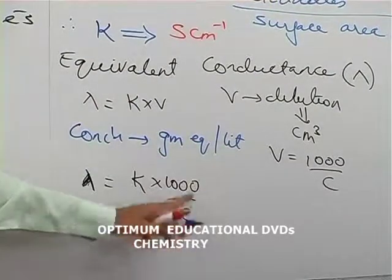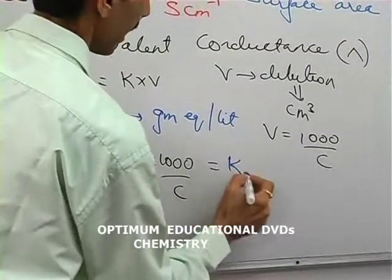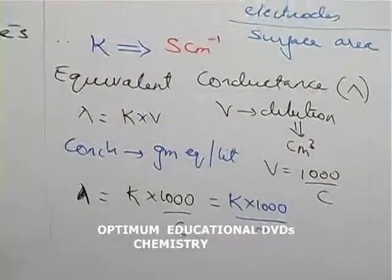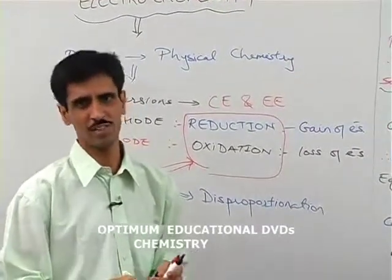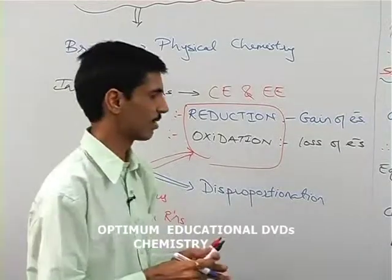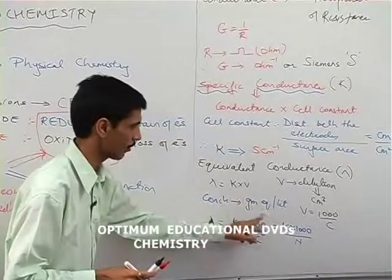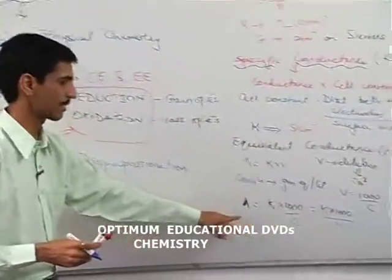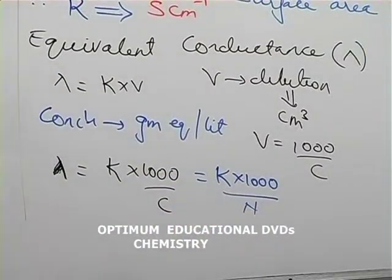Since concentration C is expressed in gram equivalents, we can write it as normality N — because normality is expressed in gram equivalents, whereas molarity is expressed in moles. So the formula for equivalent conductance can also be written as Λ = K × 1000/N, where N is normality.